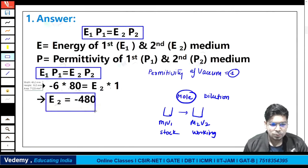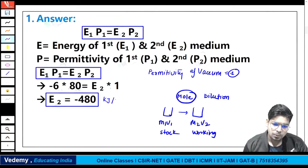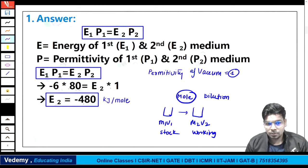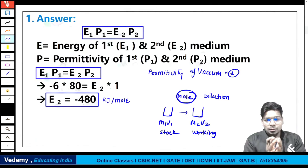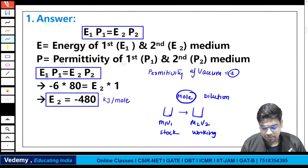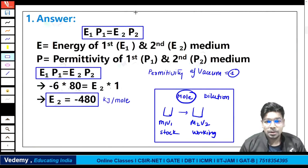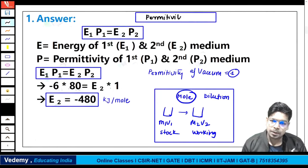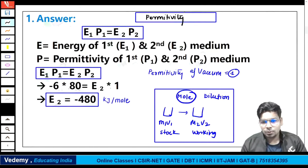Obviously, as energy decreases, permittivity increases. The permittivity of vacuum is minimum at 1, so energy is highest in vacuum. This is the permittivity concept. Remember this permittivity formula — note it down so you can compile everything together.